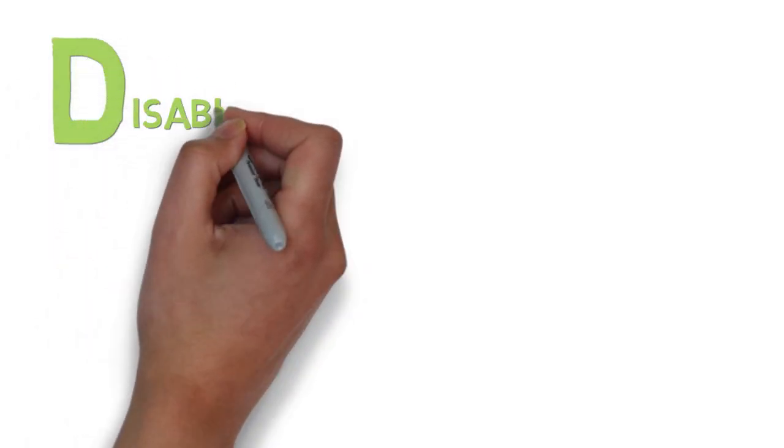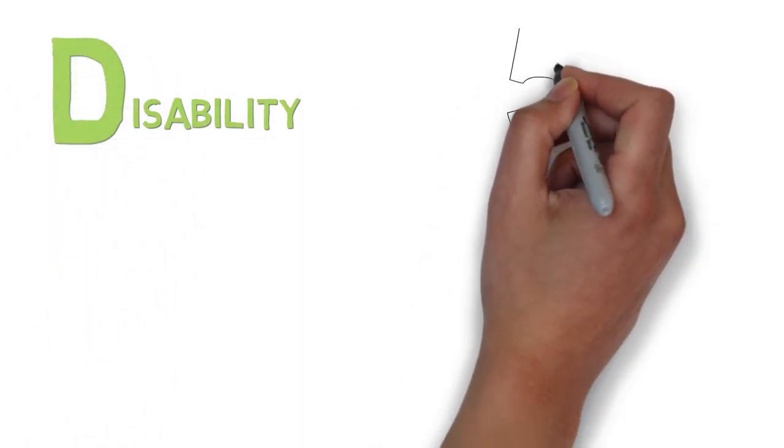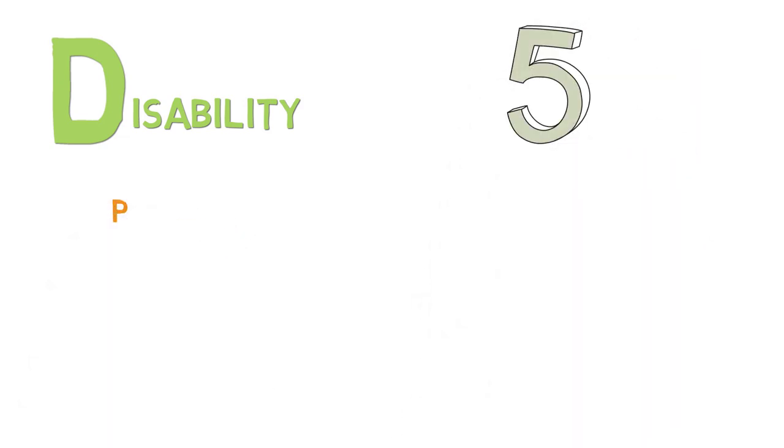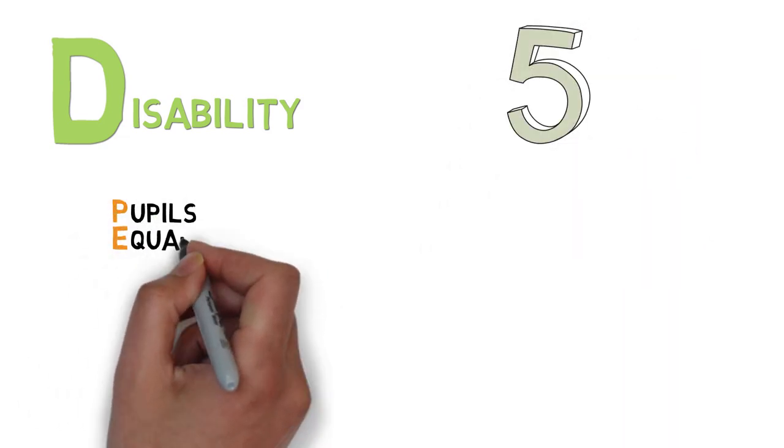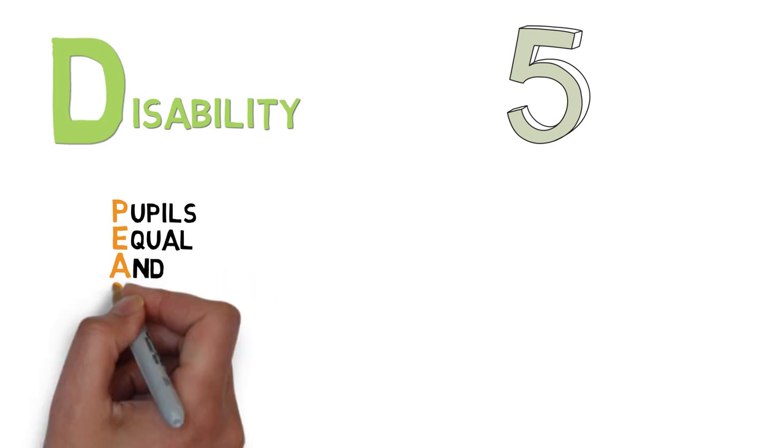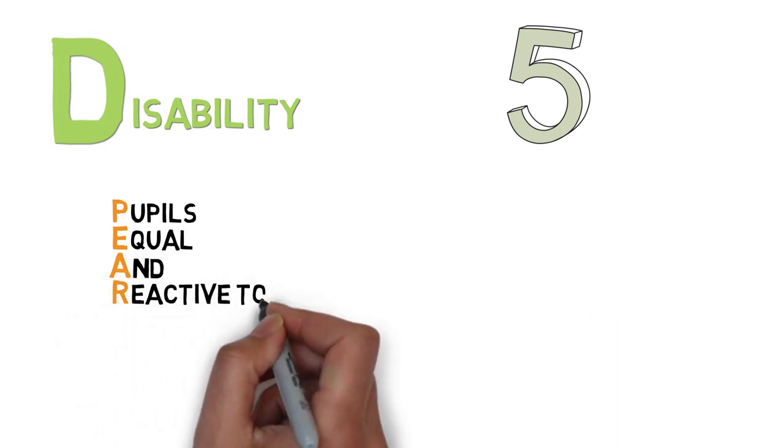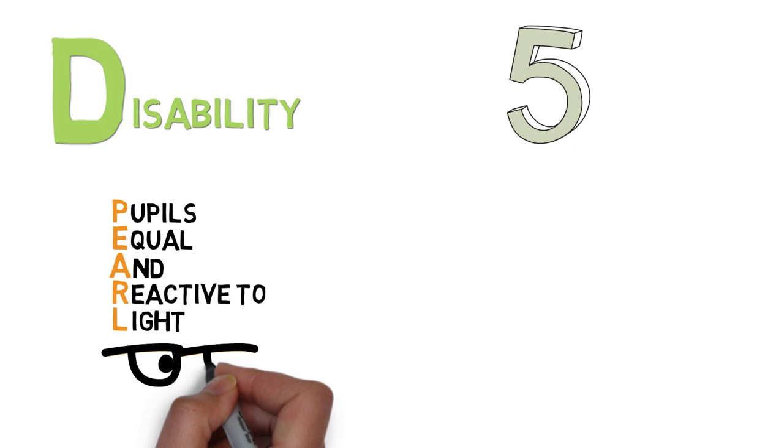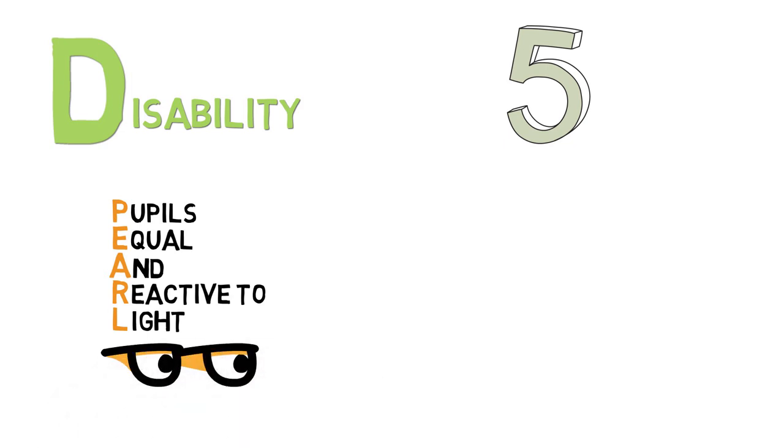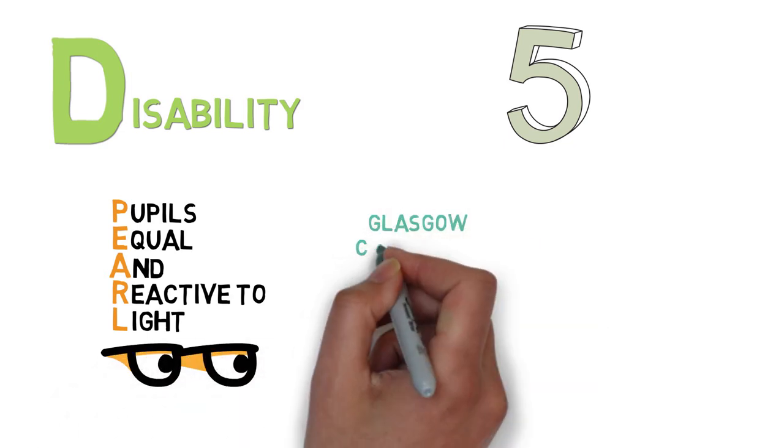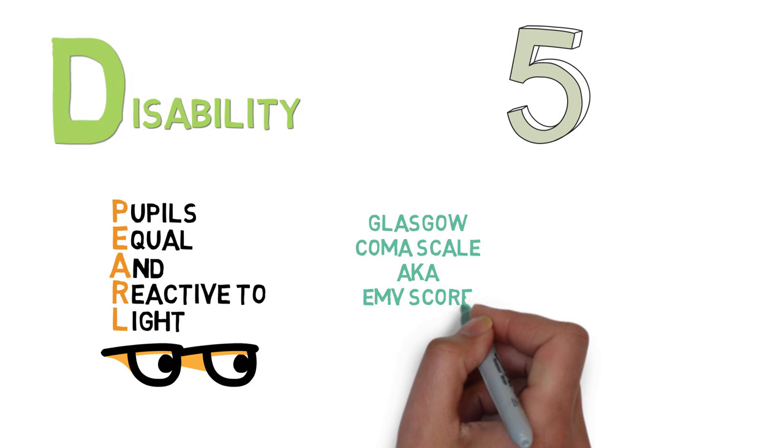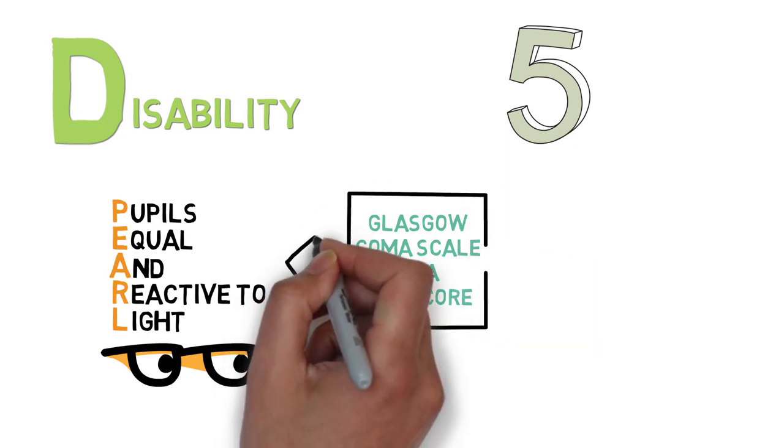D is for disability. The keyword is five. You need to remember to check for five things. Check the pupils. Are they equal and reactive to light? Pinpoint pupils could indicate opioid overdose, and anisocoria could indicate neurological damage. Assess the level of consciousness, preferably with the Glasgow Coma Scale. This also assesses lateralization, which is the third thing you need to do in D.